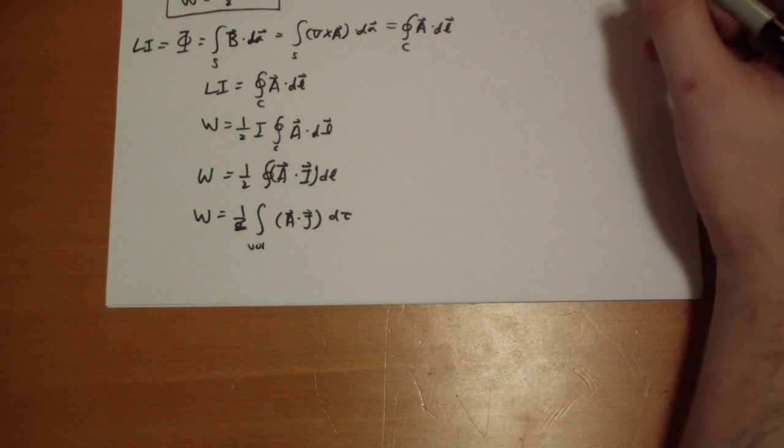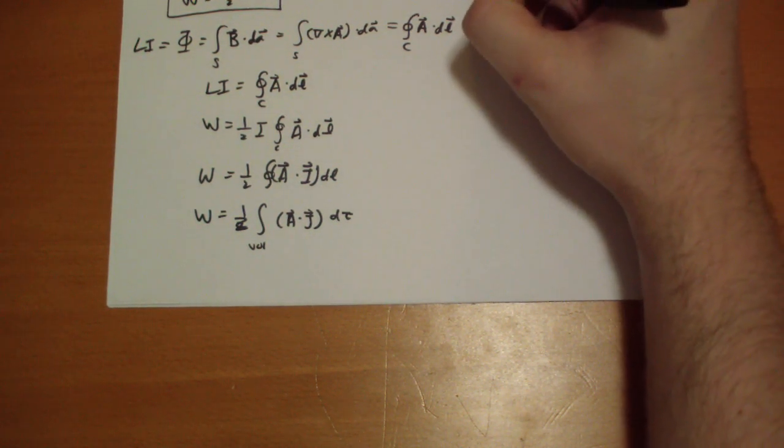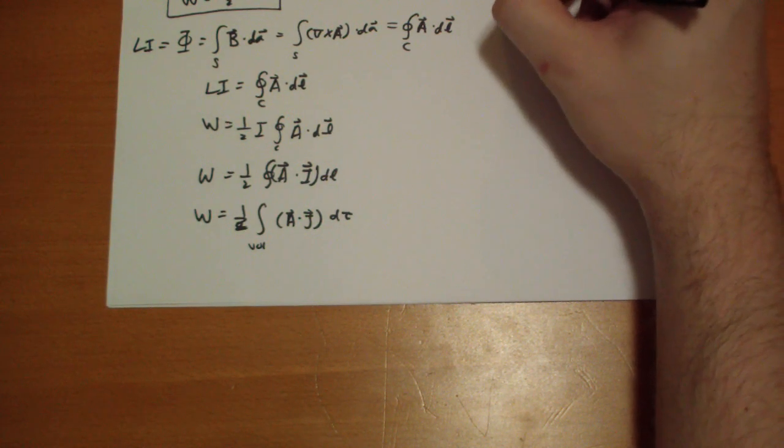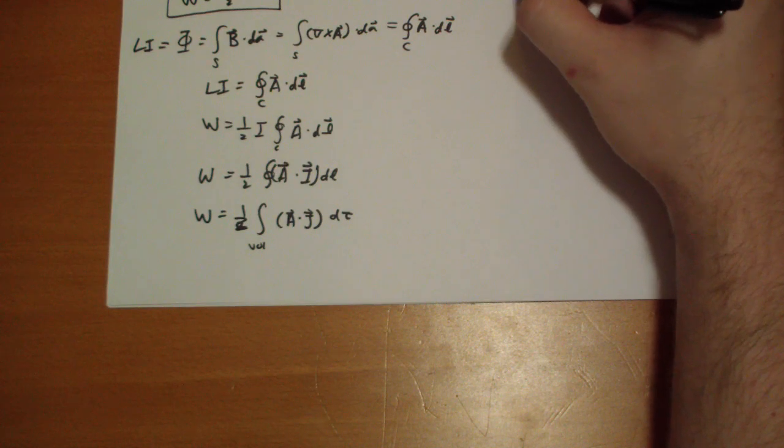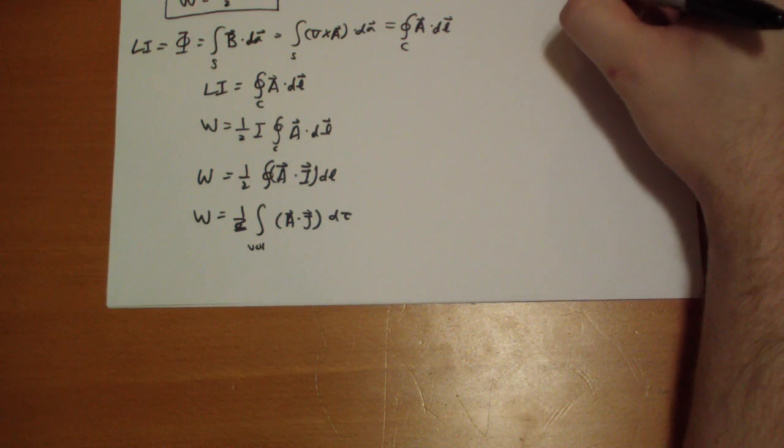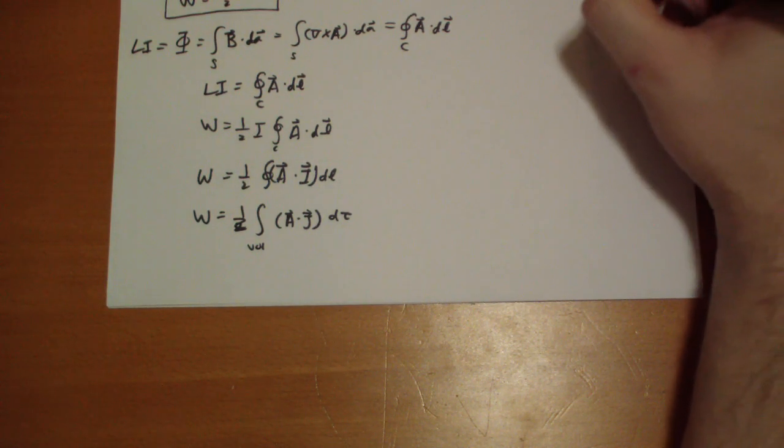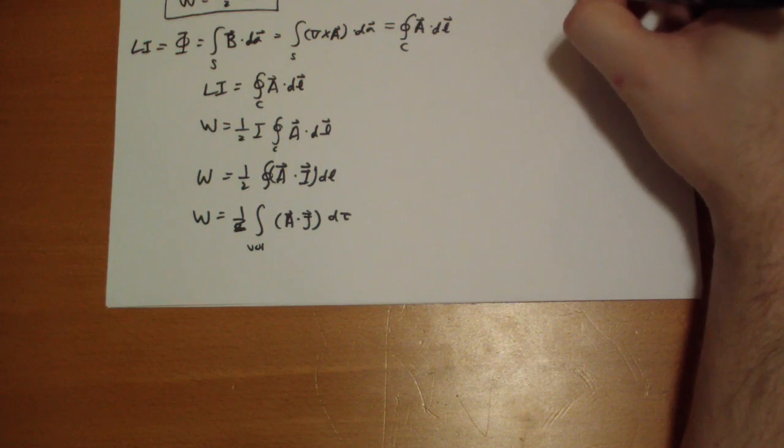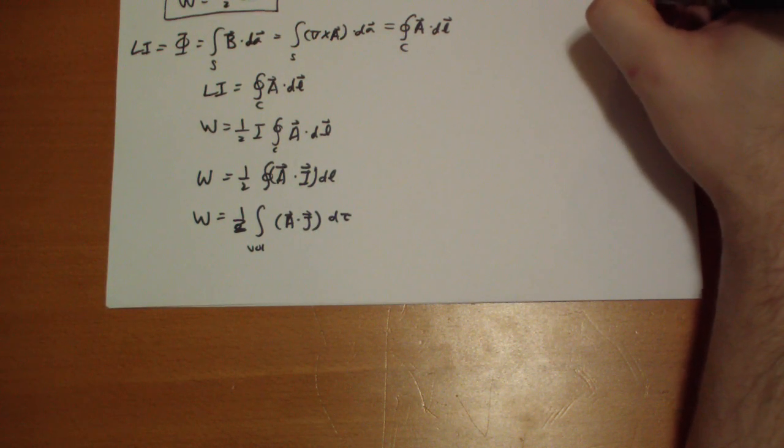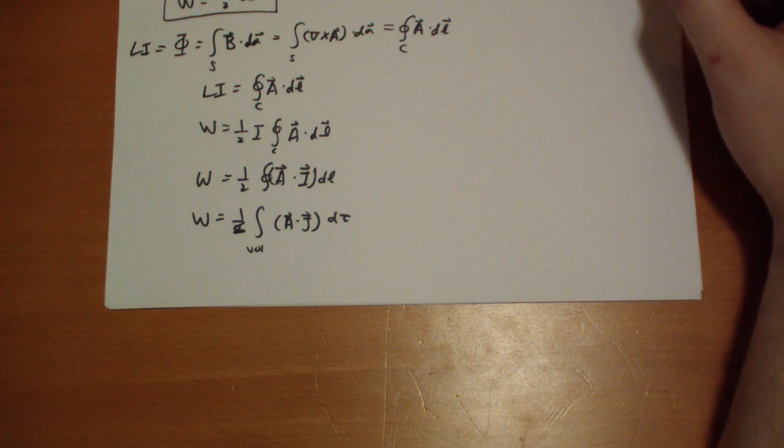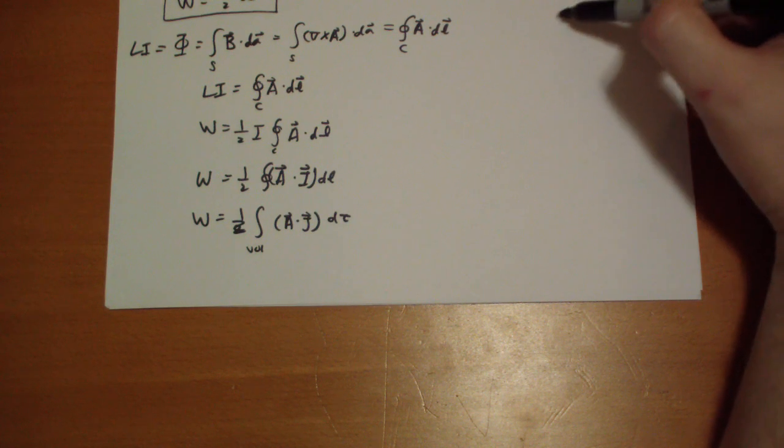Okay. So if you look at product rule number six, let me write that down. So product rule number six says that when you have the divergence of two vector fields crossed with each other, that's going to get you the second vector field dotted with the curl of the first minus the first vector field dotted with the curl of the second. And indeed, this matches up exactly with that.